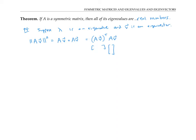Now remember, when we take the transpose of a product, that's the same thing as doing the product of the transposes in the other order. So I can rewrite this as follows. And since A is symmetric, A transpose is just the same thing as A.